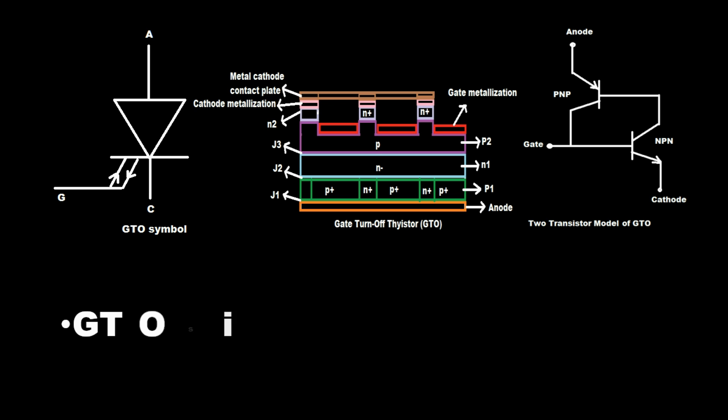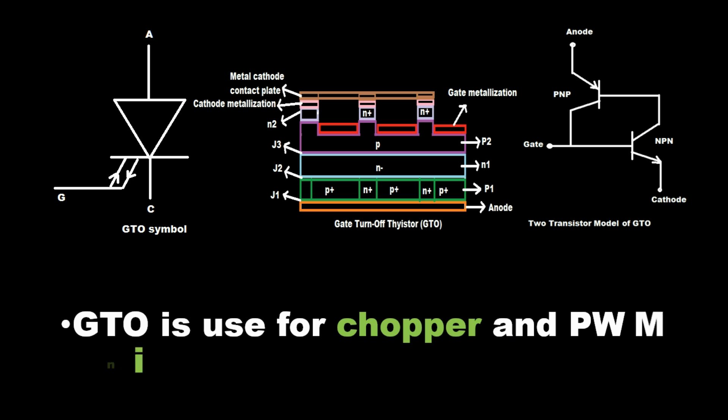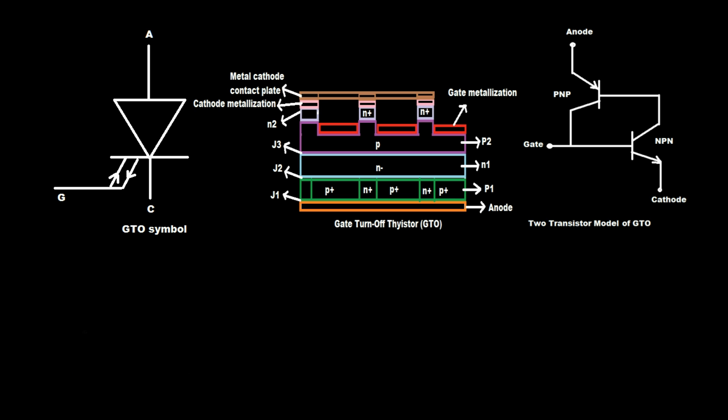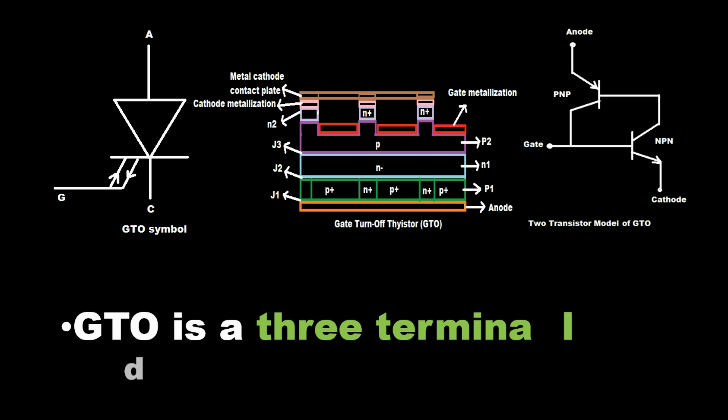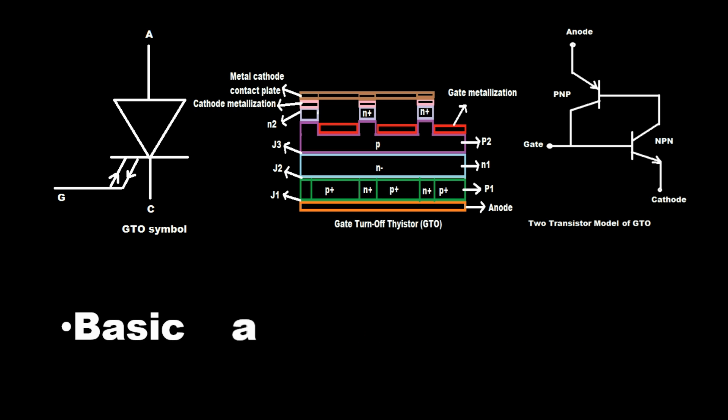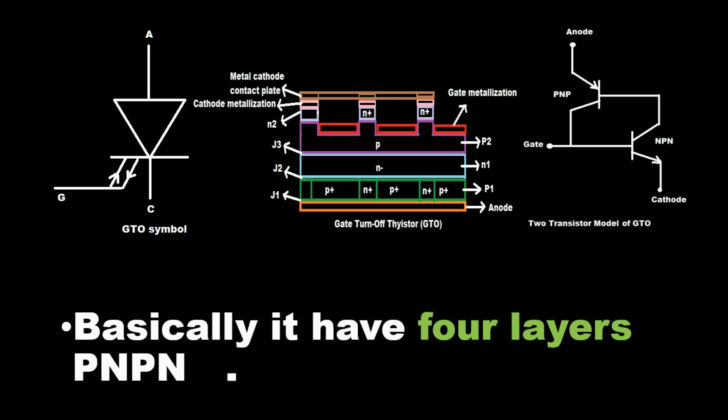GTO is used for chopper and PWM inverter applications. GTO is a three terminal device. Basically it have four layers PNPN.